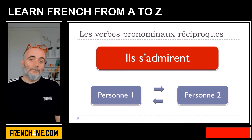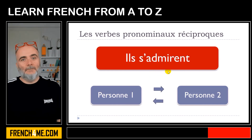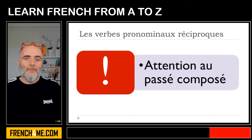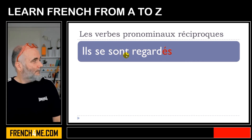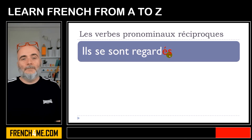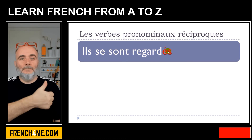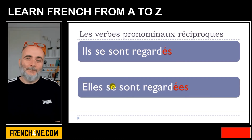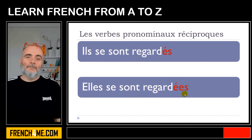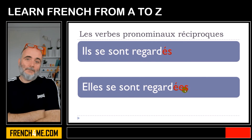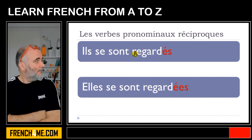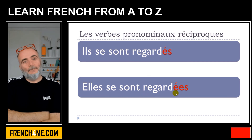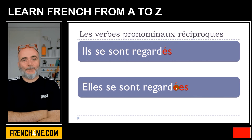If a sentence appears without any context before or after, it can be ambiguous and mean two different things. Also, be careful when forming the passé composé, because with être as auxiliary you must add the appropriate ending. For example, ils se sont regardés — add a final s for the plural. For the feminine plural: elles se sont regardées — add e for feminine and s for plural.